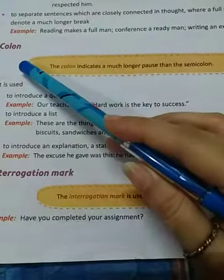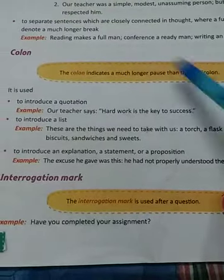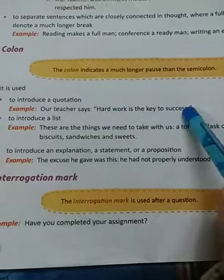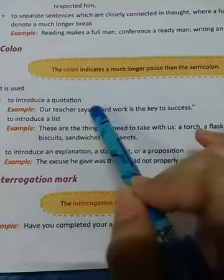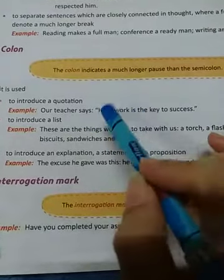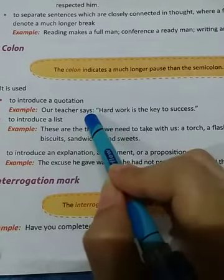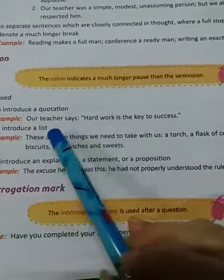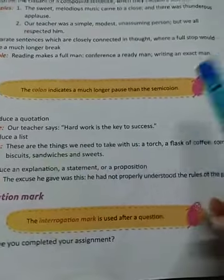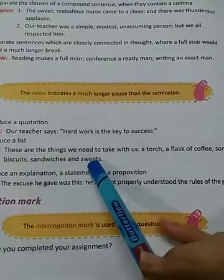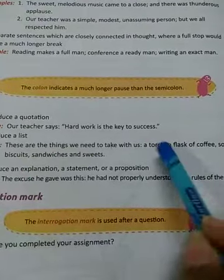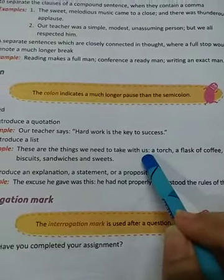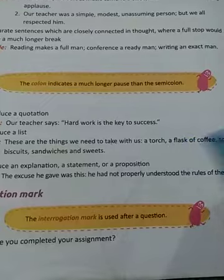Now we learn colon. The colon indicates a much longer pause than the semicolon. To introduce a quotation — for example: 'Our teacher says: hard work is the key to success.' The colon introduces the quotation. To introduce a list — for example: 'These are the things we need to take with us: a torch, a flask of coffee, some biscuits, sandwiches and sweets.' The colon introduces the list of things we are about to take.